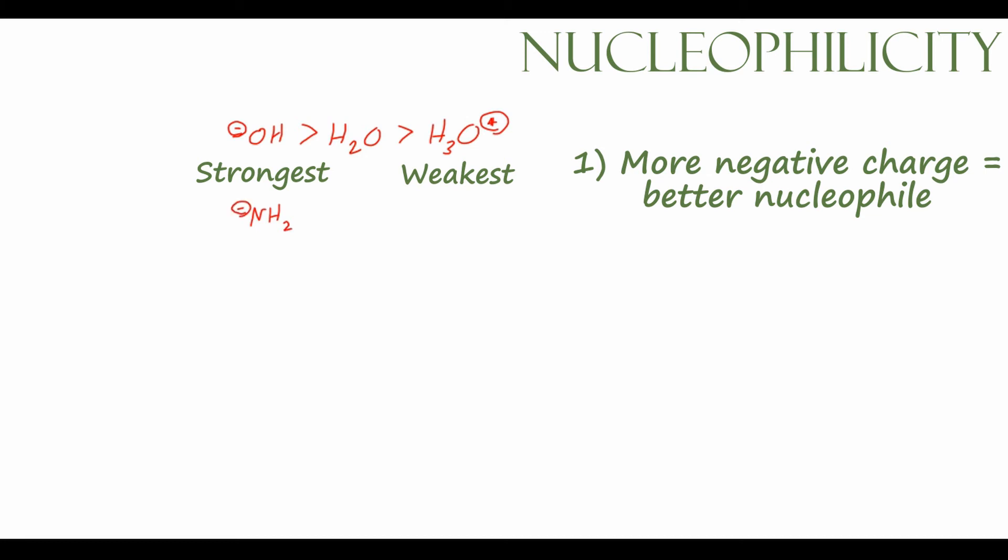We can also look at derivatives of ammonia. So we can have NH2⁻, the amide anion, NH3, so neutral nitrogen, and NH4⁺, ammonium cation. And just like we have above, NH2⁻ will be our strong nucleophile. It's actually a very strong nucleophile. NH3 is also a pretty good nucleophile. And NH4⁺ is again, non-nucleophilic.